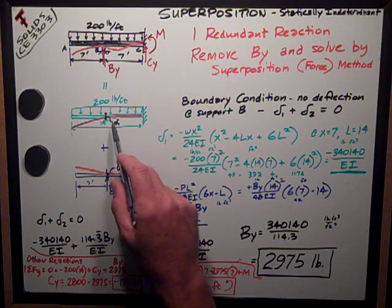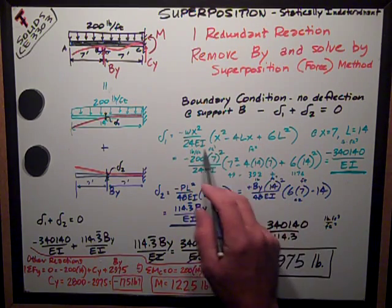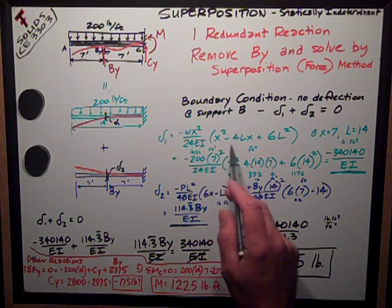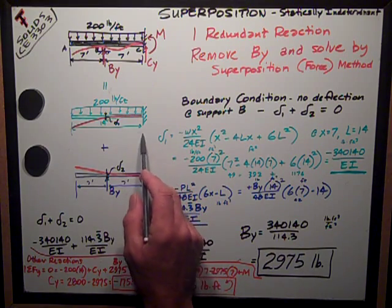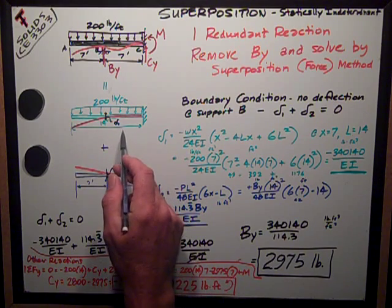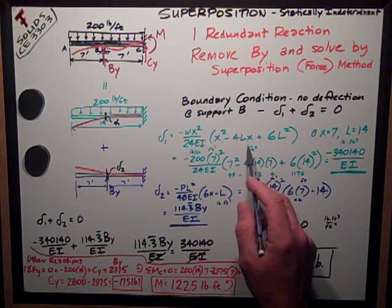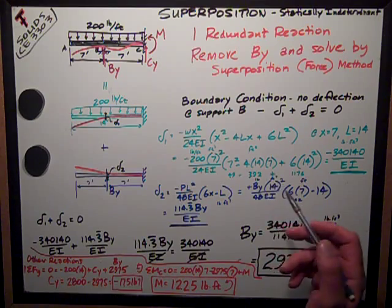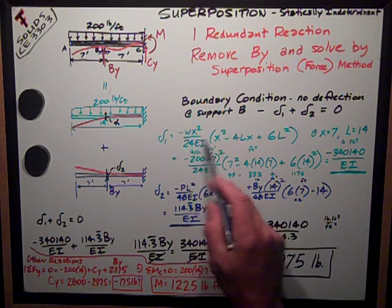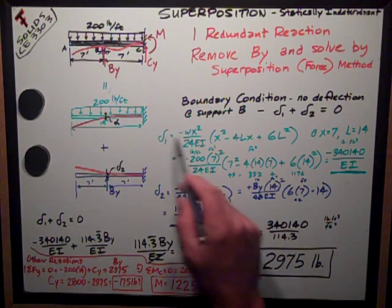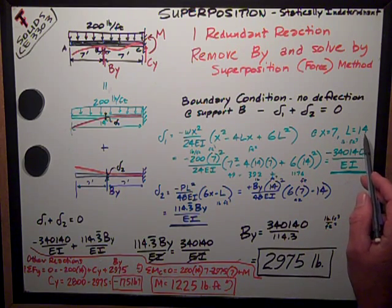So the equation for the deflection of this cantilever beam under a uniform load at its midspan is this lengthy one. It's not bad, minus WX squared over 24EI times this term, where X is the distance from the cantilever end, and L is obviously just the span of the beam. So L is 14, X is 7, so I just substitute those numbers, and my load, this is W, my load pounds per foot. Just substitute all those numbers in here at X equals 7 and L equals 14.